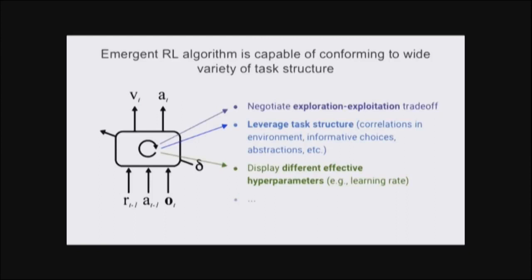We trained meta-RL on a variety of other tasks, but I don't have time to get into these today. The outcome shows that the RL algorithm implemented in the recurrent activations of the LSTM is capable of conforming to a wide variety of task structure, including making choices to gain information, even if it's not immediately rewarding, and displaying different effects of learning rates based on the volatility of the environment, even when the actual learning rate is held to zero.